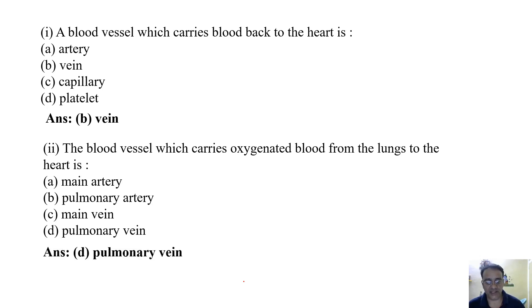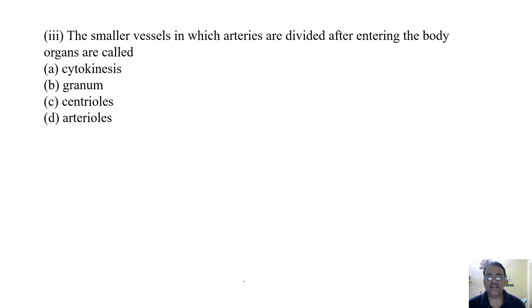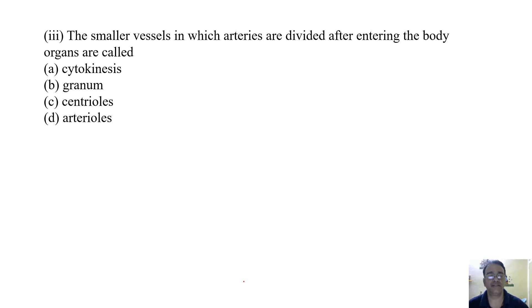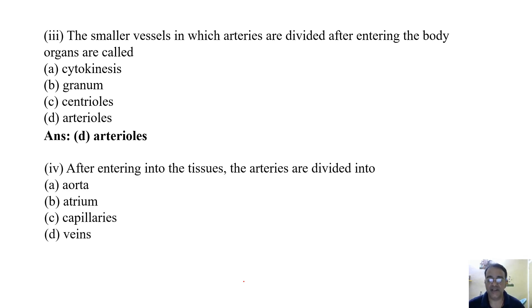Question 3: The smaller vessels into which arteries are divided after entering the blood organs are called — the correct answer is arterioles.